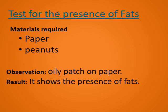Test for the presence of fats. Materials required: paper and peanuts. Procedure: take a piece of paper, add a few peanuts on it, fold the paper and crush the peanuts. Then unfold the paper and you will observe an oily patch on the paper. This shows the presence of fats in the given food sample.